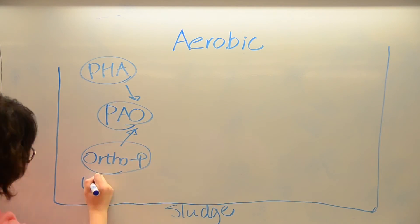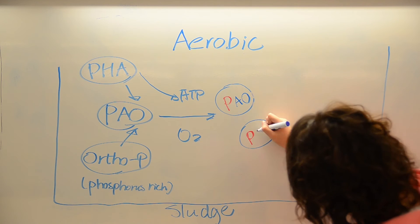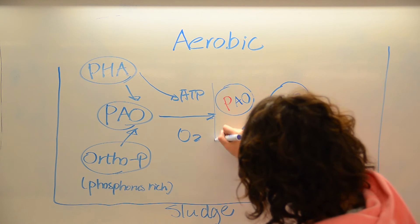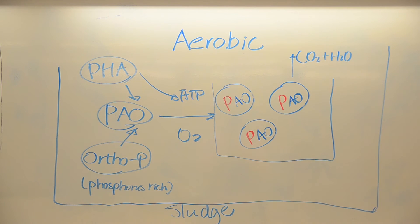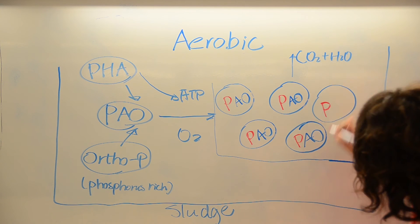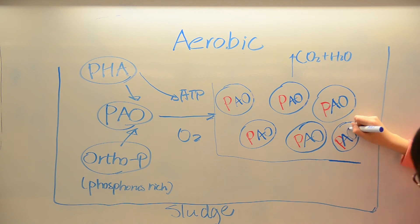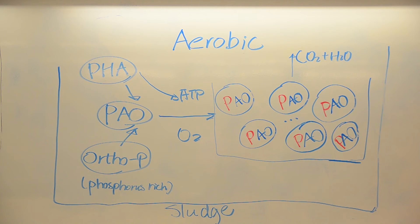In the aerobic tank, with the presence of oxygen, the PAOs multiply quickly, and in doing so, uptake a huge amount of phosphorus. The process involves taking in the orthophosphates and polyhydroxyalkanoates from the anaerobic phase, and then using ATP and oxygen, producing more PAOs, as well as CO2 and water. A small amount of glycogen is also produced.